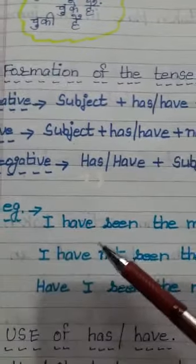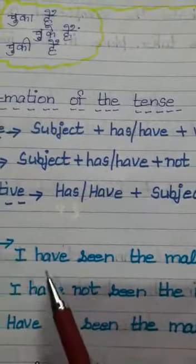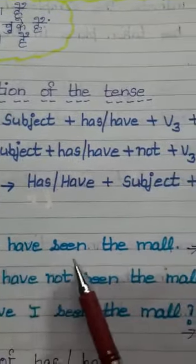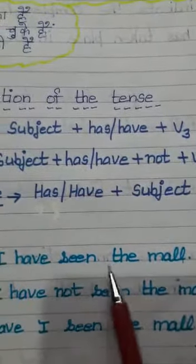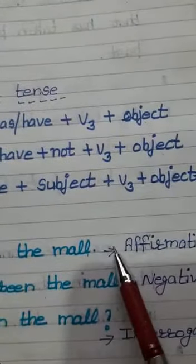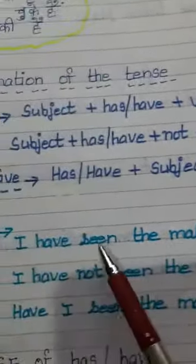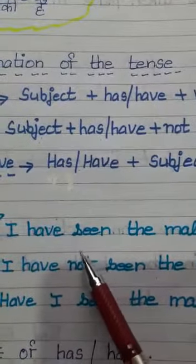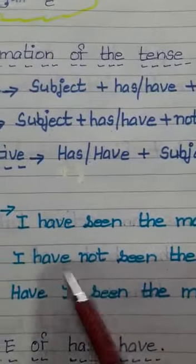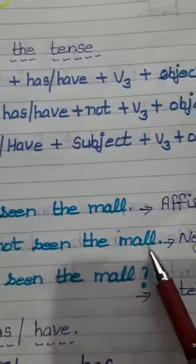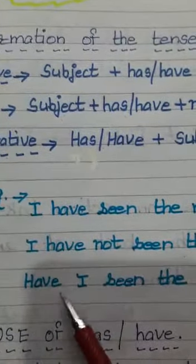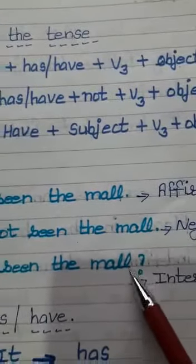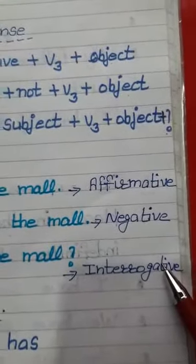Let us elaborate with an example. For affirmative: 'I have seen the mall' — main mall dekh chuka hun. To convert it to negative, we put 'not' after the helping verb: 'I have not seen the mall.' For interrogative, we put the verb at the first place: 'Have I seen the mall?' — with a question mark.